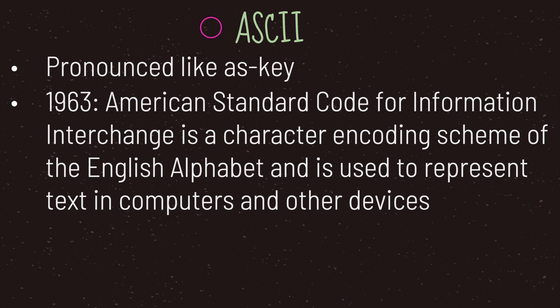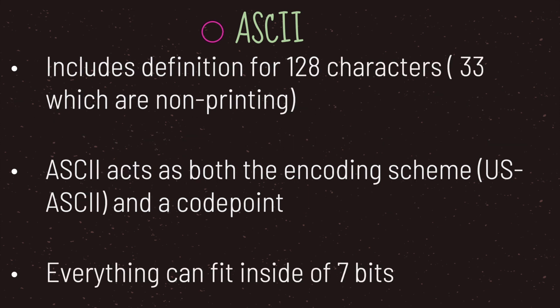As the years continued, technology started to advance, including computers. However, computers around 1960, before 1963, had a problem — there was no way of standardizing how the English American language was represented. So in 1963, the American Standard Code for Information Interchange (ASCII) was developed. ASCII includes a definition for 128 characters, 33 of which are non-printable. ASCII serves as both the encoding scheme and a code point, and 128 characters can fit inside seven bits.